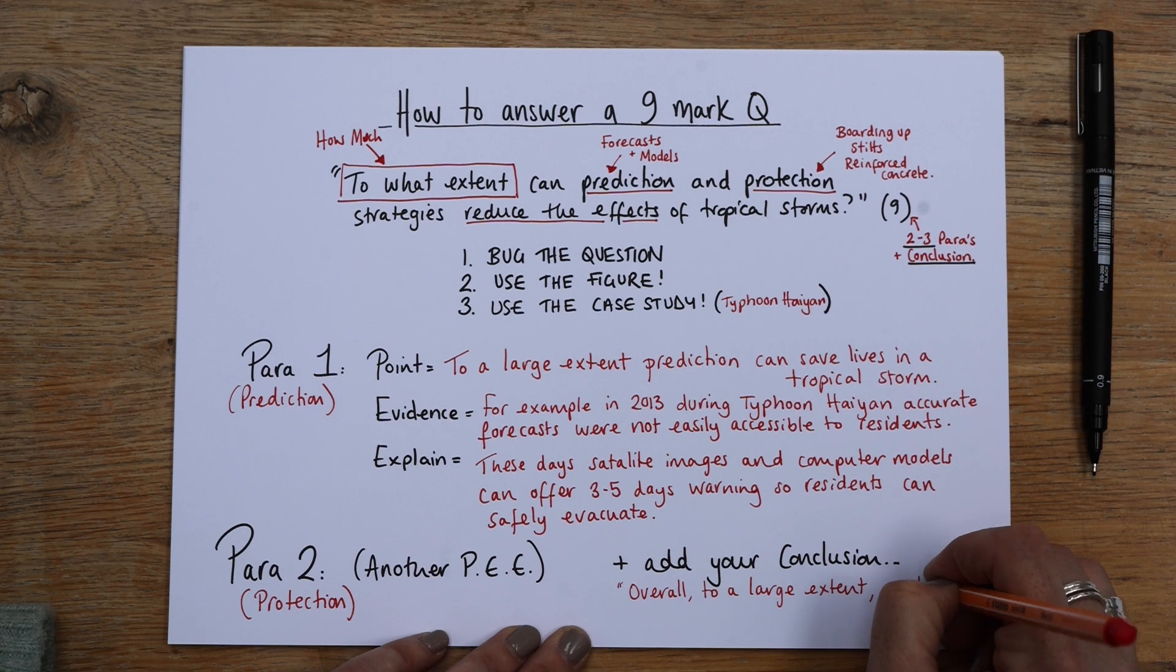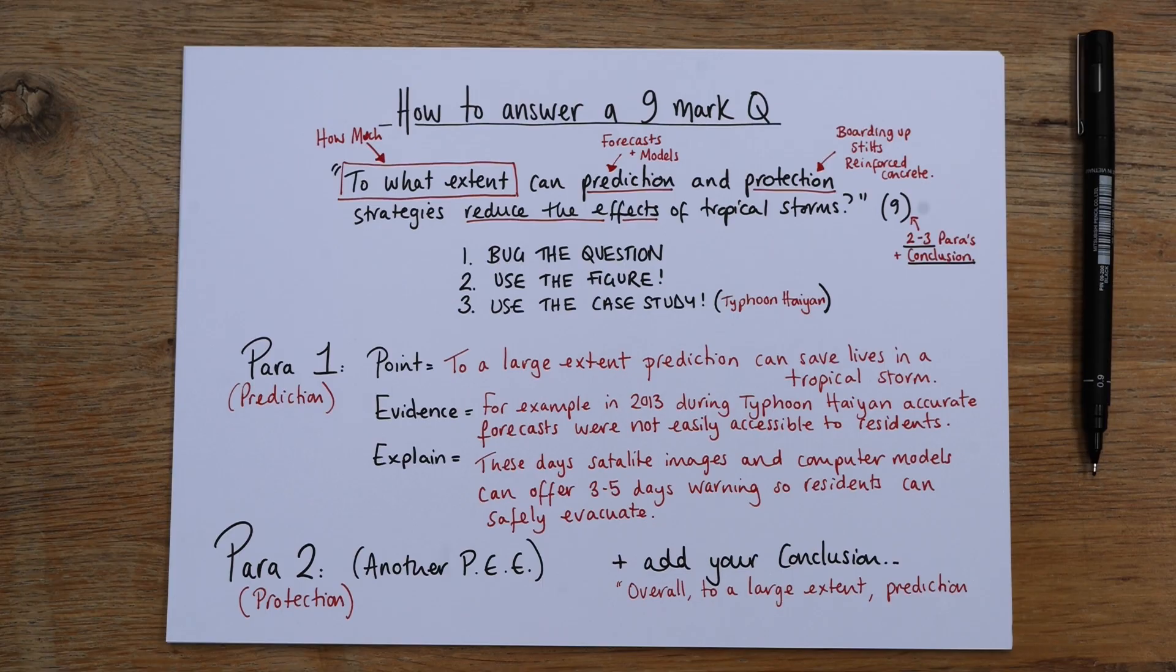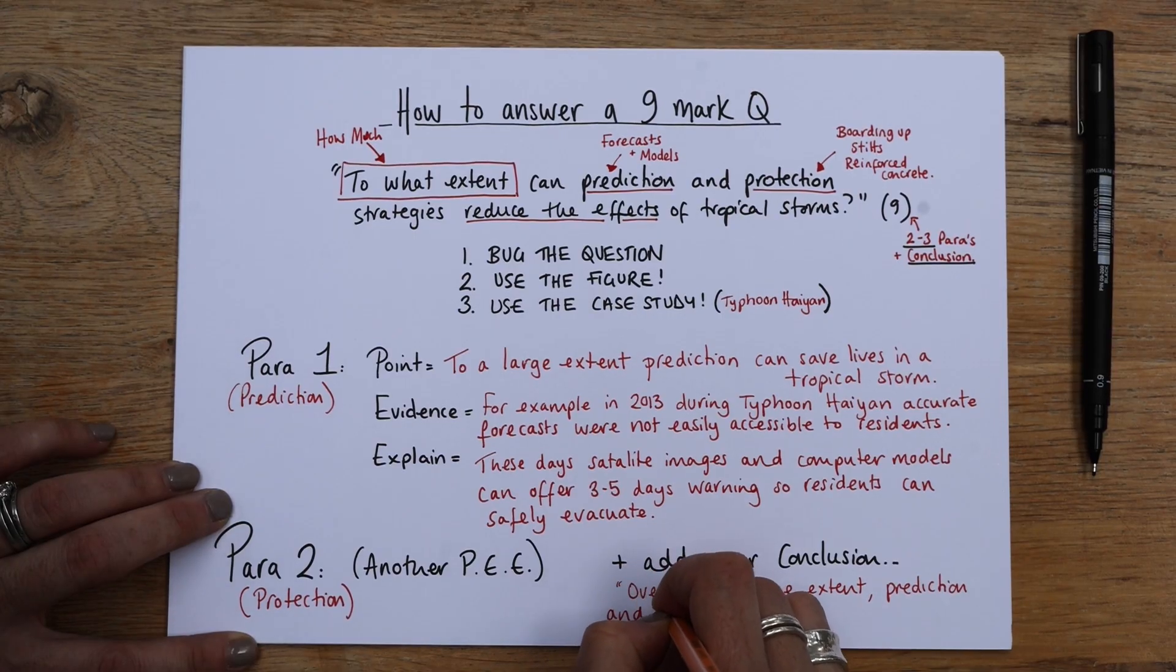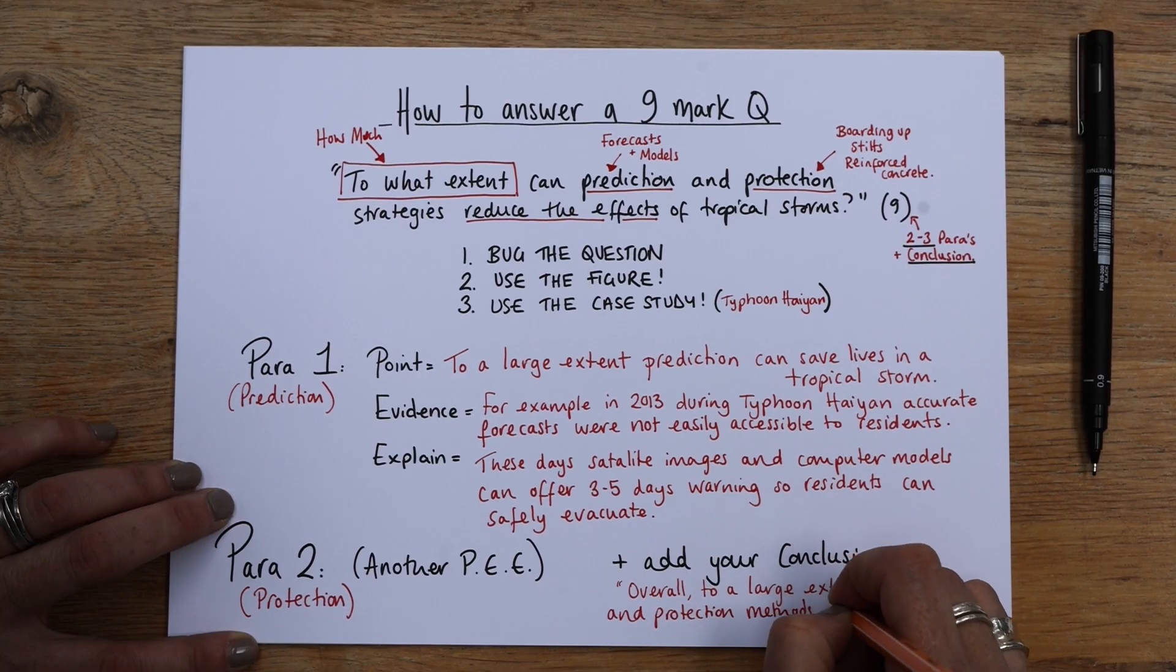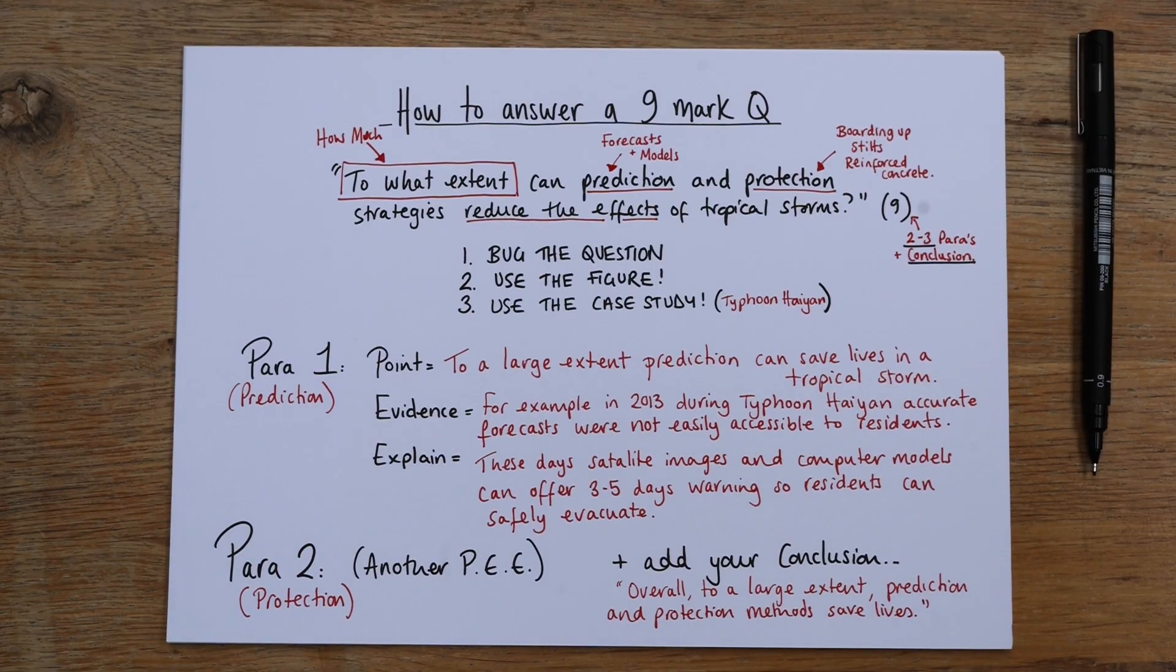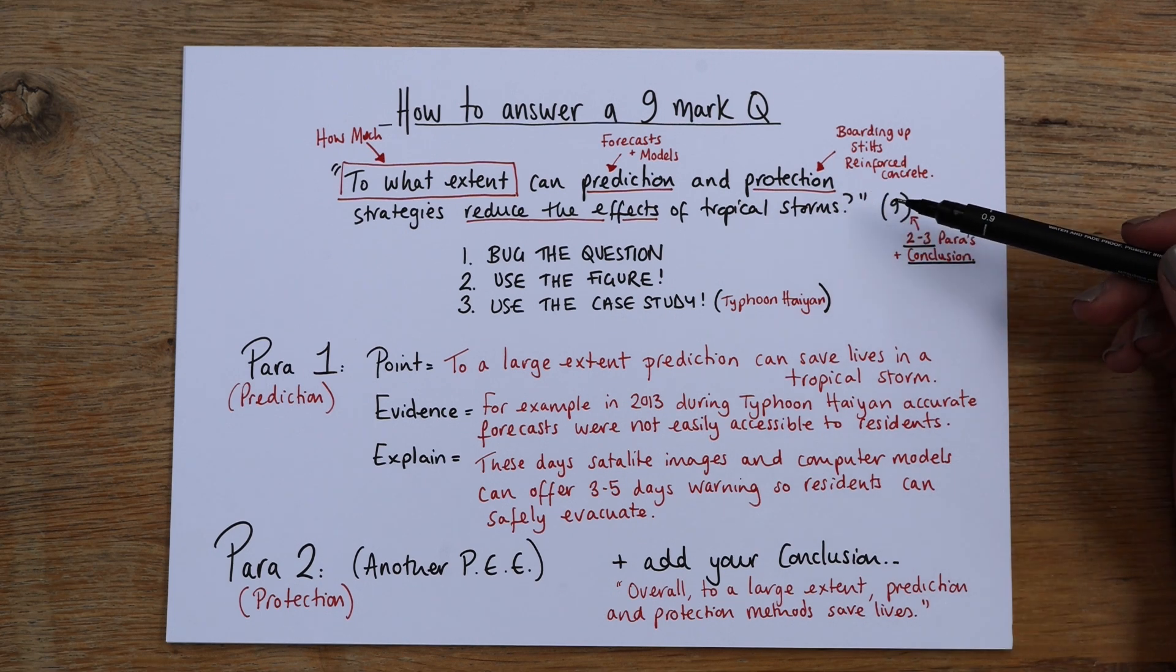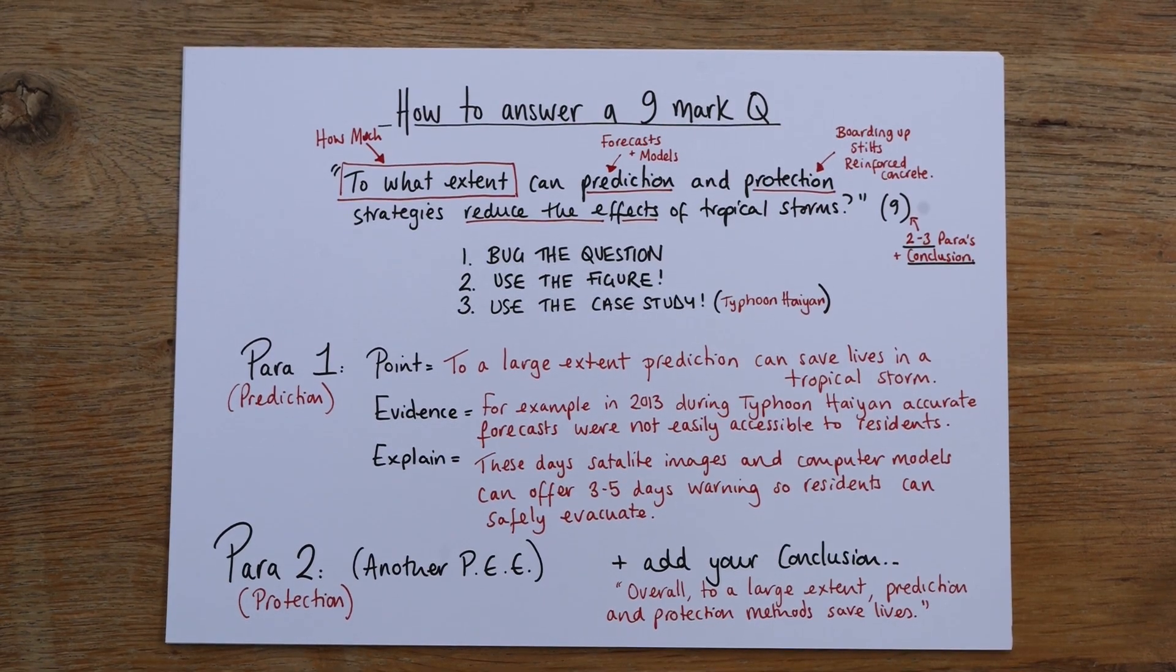You would say prediction. Well, you could even say which are more important, but that's not completely necessary, but you could say to a large extent, prediction and protection methods save lives. Now again, you can beef that out. You can put a bit more in it, but you can see from the layout, what's expected of a nine marker. You can see it isn't really too full on. It's just dissecting that question and knowing what sort of structure to put in place. So I hope that's helpful and best of luck.